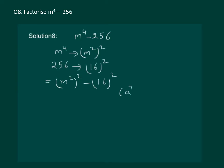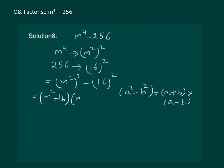We use the identity a squared minus b squared equals a plus b into a minus b. Applying it, we get m squared plus 16 into m squared minus 16. So we have reached two factors of m to the power 4 minus 256. Let us see if we can factorize any of them further — yes, we can.